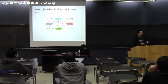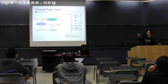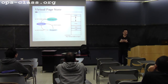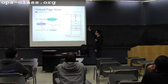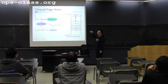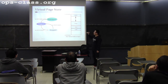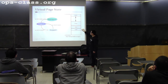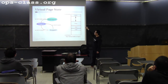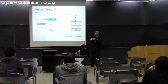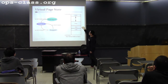Now let's look at virtual page states. Physical page state goes in coremap entries; virtual page state goes in page table entries. After you call as_create and as_define_region to define regions, every virtual page's state is unmapped — there are no physical pages corresponding to those virtual pages yet.